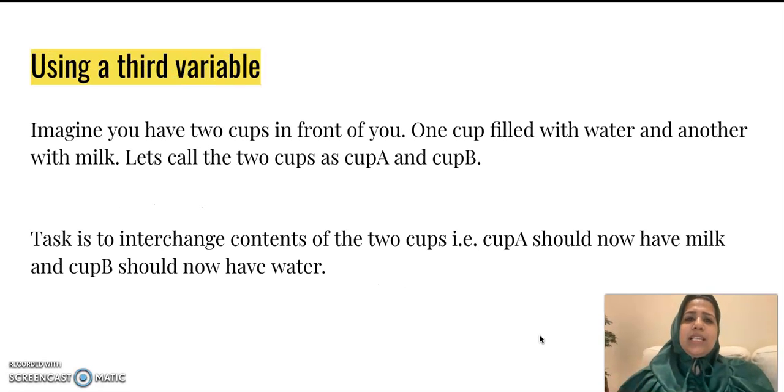So first let us look at doing the swapping by using a third variable. As an example, imagine that you have two cups filled in front of you. So the first cup, we'll call it as cup A, which is filled with water, and the second cup, which we'll call as cup B, that is filled with milk.